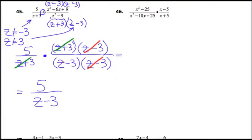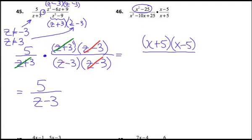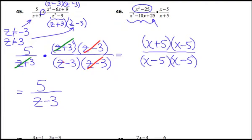Number 46 is just a multiplication problem — easier than number 45. The x squared minus 25 gets factored into x plus 5 and x minus 5. The denominator x squared minus 10x plus 25 is a perfect square trinomial. I need two numbers whose product is positive 25 and that add to negative 10 — that would be negative 5 and negative 5.